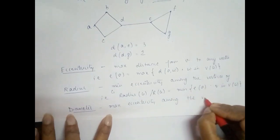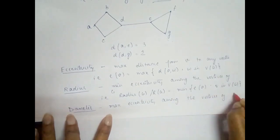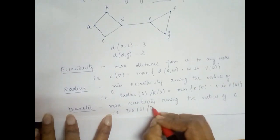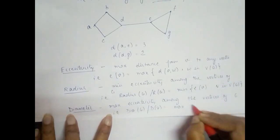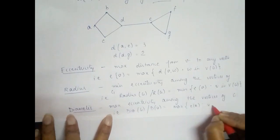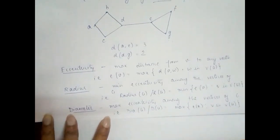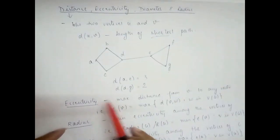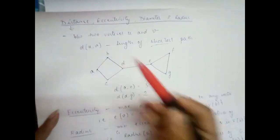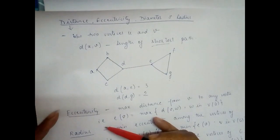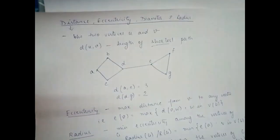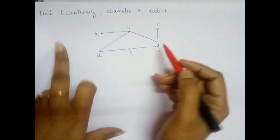Diameter is defined as the maximum eccentricity among the vertices of G: dia(G) = maximum of e(v) where v is in V(G). So to find radius or diameter, we first calculate eccentricity, and for eccentricity we must calculate distances. Thus, finding diameter and radius requires calculating both distances and eccentricities.